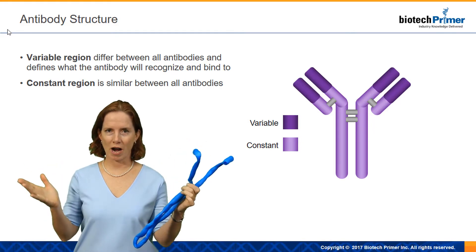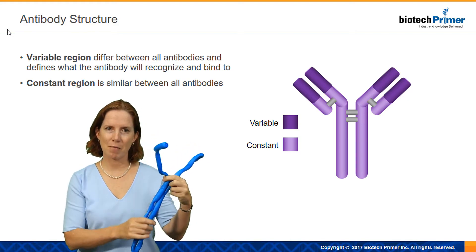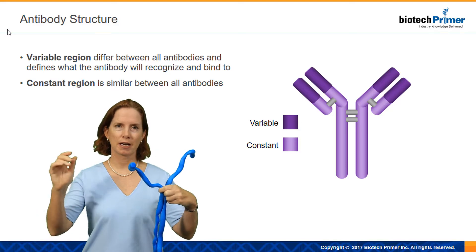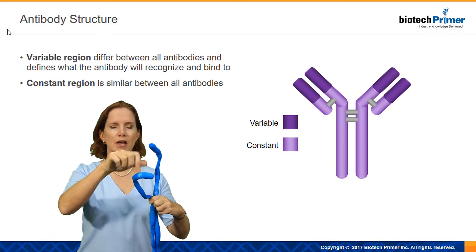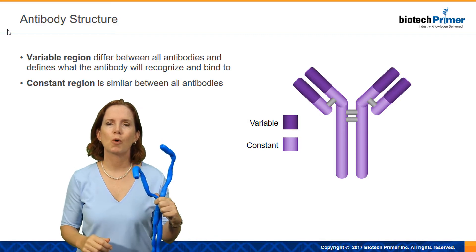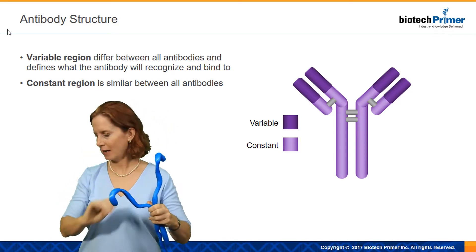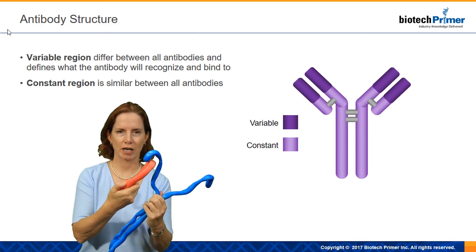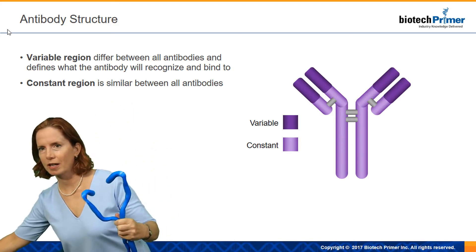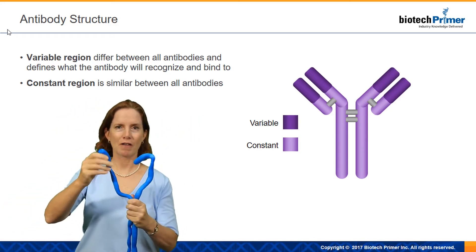They're typically represented as a Y shape, as I have shown here and shown on the slide. The constant region is the stem of the antibody, and that doesn't change — most antibodies have a very similar constant region. What does change is the variable region, the shape of those arms. It is the shape of the variable region that determines what target antigen an antibody is going to recognize. One antibody might have arms shaped like this and recognize one particular target; another antibody might have a different variable region shape and recognize a different unique target.